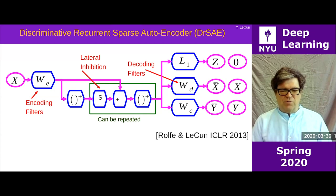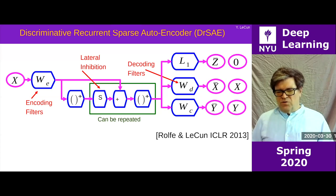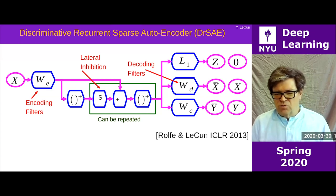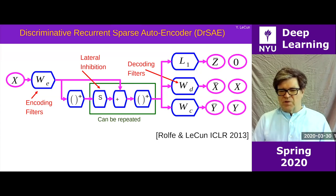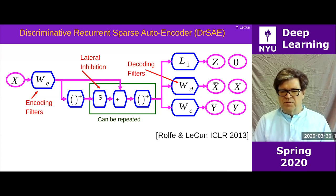This is a neural network with skip connections, and we're going to train it to do three different things with three different criteria. One criterion is going to be just reconstruct x — there's a decoding matrix that reproduces the input on the output, minimizing squared error. This is what's indicated by the decoding filters here. This could be convolutional or not, depending on which version you like.